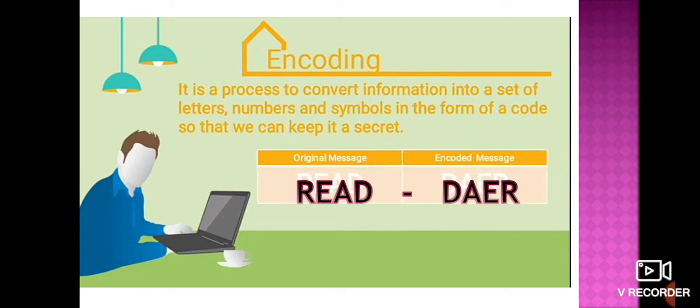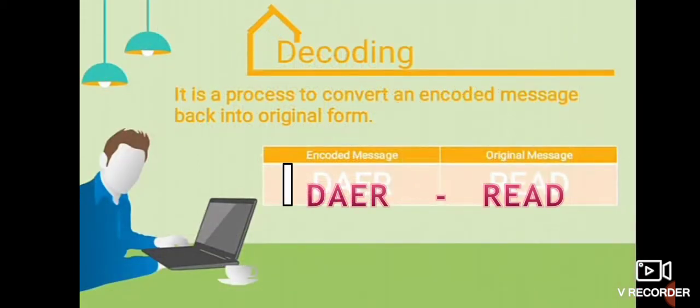Now, moving to our next content of this chapter, encoding. It is a process to convert information into a set of letters, numbers and symbols in the form of a code so that we can keep it a secret. See here, original message R-E-A-D and the encoded message D-A-E-R. It is just reverse of that.